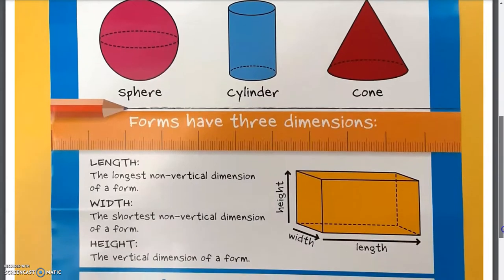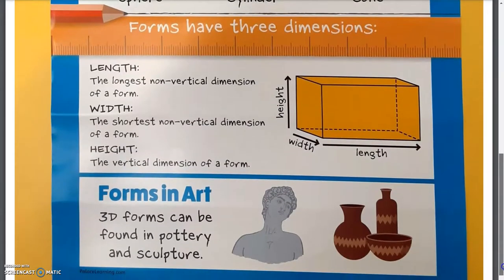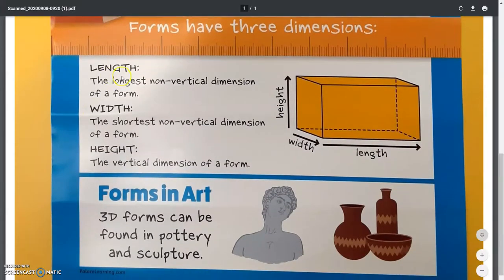Forms have three dimensions. They have length, which is the longest part. It is horizontal. It's not vertical. This is length.